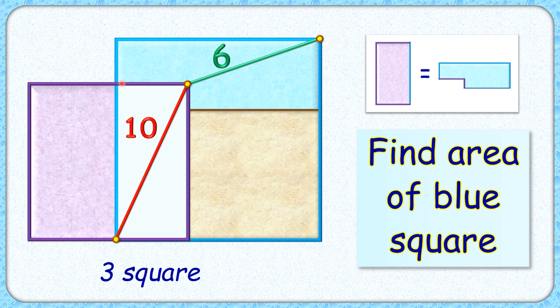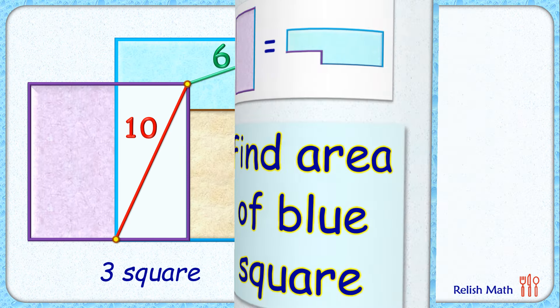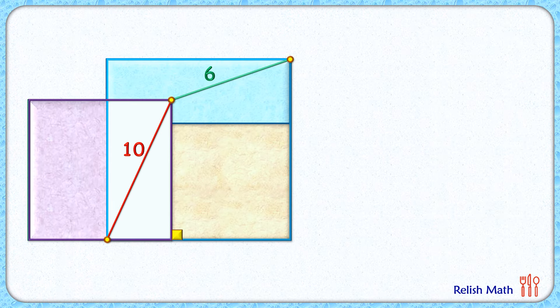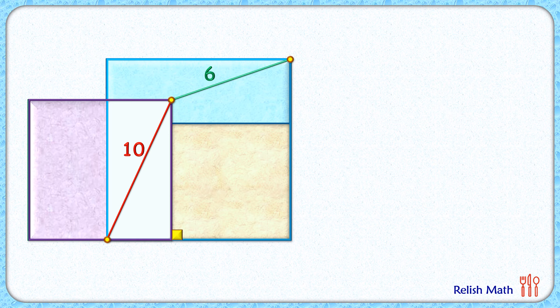The exciting part is with this limited data we have to find area of this blue square. Let's check this interesting solution. We'll solve it in three steps: first we'll find distance between this point and the vertex of blue square, then we'll get this angle between the red and green line segment, and finally we'll get the area of our blue square.